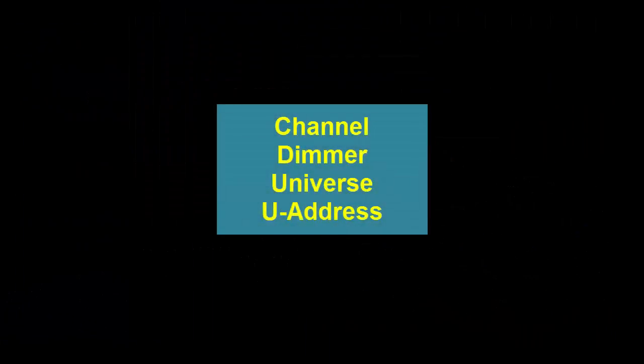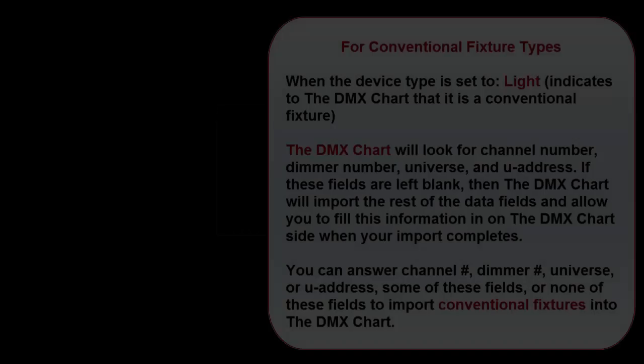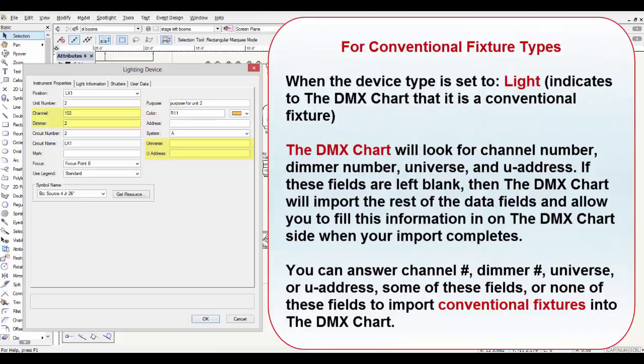Let's look at channel, dimmer, universe, and U-address and how the DMX chart handles that information. For conventional fixture types — when the device type is set to 'light' — the DMX chart will look for channel number, dimmer number, universe, and U-address. If these fields are left blank, the DMX chart will still import the rest of the data fields and allow you to fill in that information on the DMX chart side after the import completes. You can answer all, some, or none of them to import conventional fixtures.